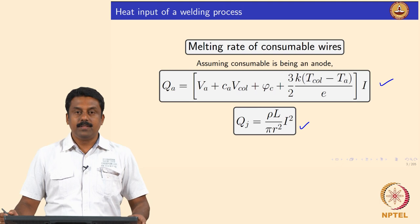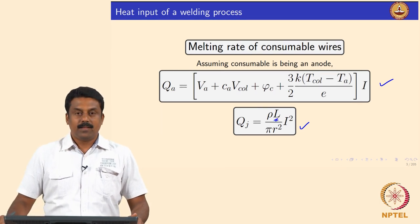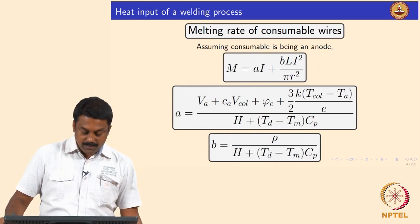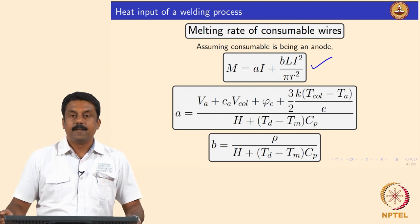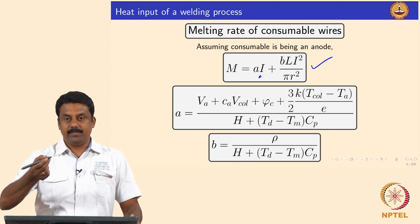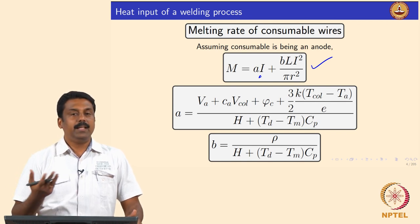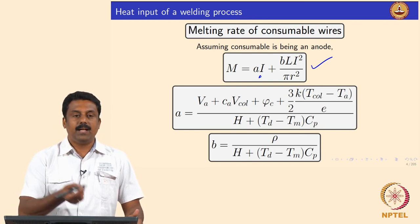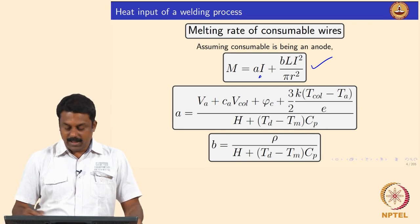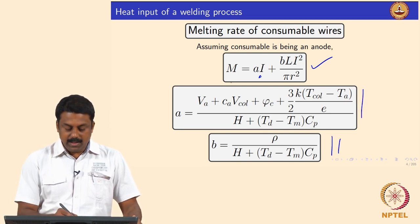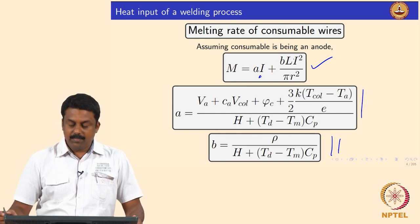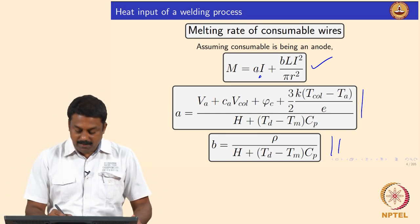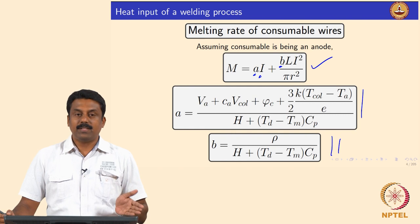The resistance heating term uses stick-out length L and the radius R of the filler wire. Using the I term in QA and the I² term in Joule heating, with A and B as constants for a given material and process condition, we can simplify. Taking A and B out as constants, we ultimately get an equation: melting rate = AI + BLI²/πR², where A and B can be calculated for a given process condition and material.